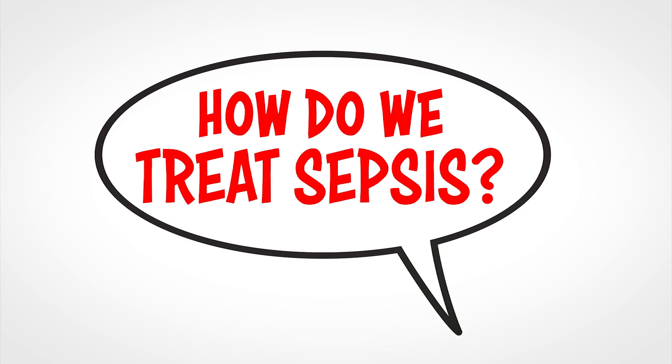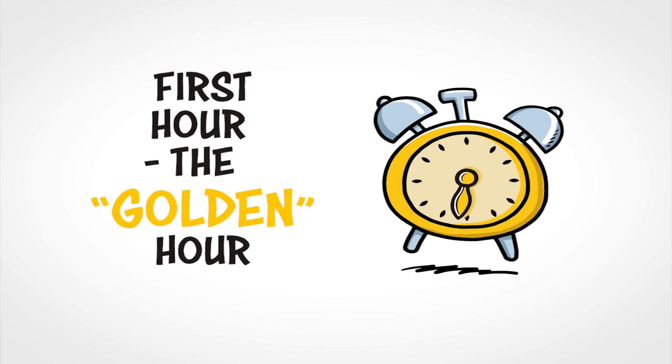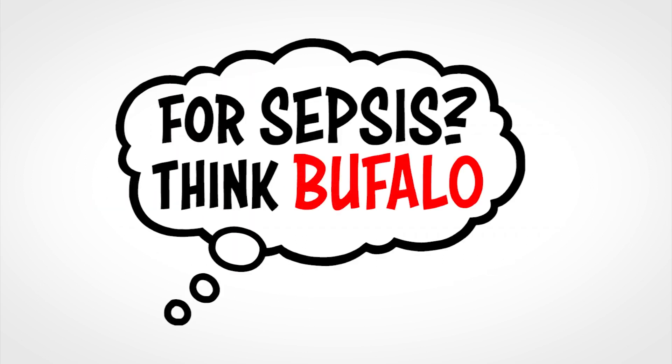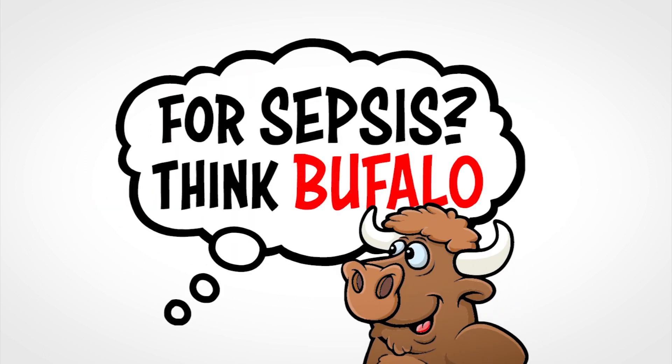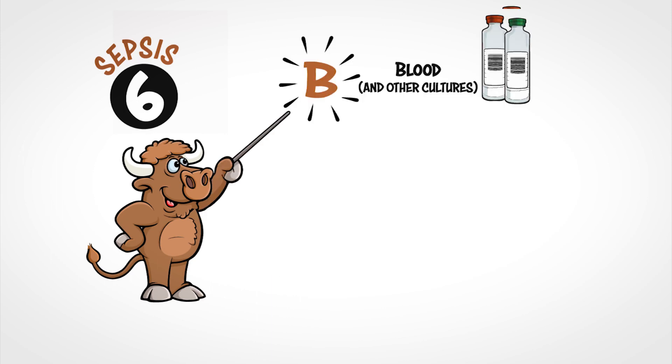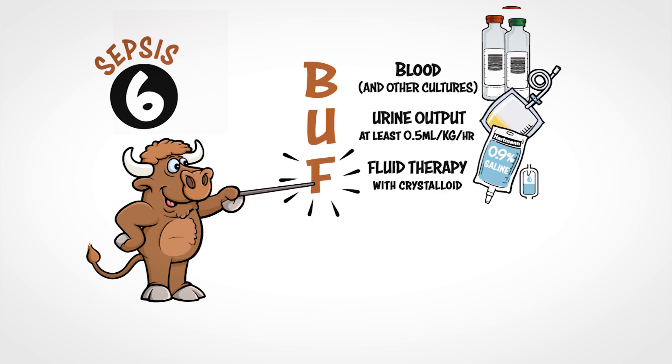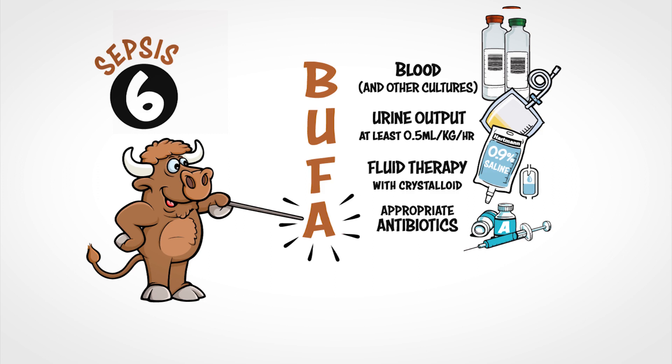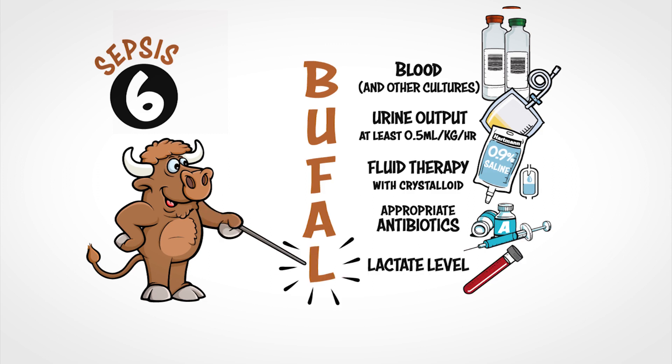So, how do we treat sepsis? Well, the clock starts ticking as soon as you recognise sepsis. The first hour is the golden hour and timely intervention within the first 60 minutes provides the best outcomes. For sepsis, think Buffalo. Buffalo allows us to deliver sepsis 6 easily. It stands for blood and other relevant cultures, urine output, fluid therapy, appropriate antibiotics, lactate and oxygen.